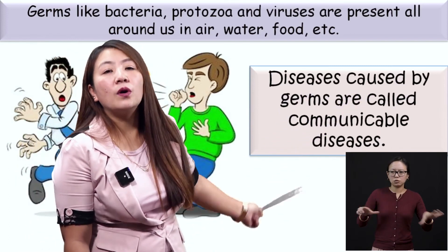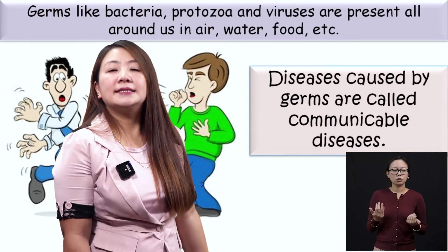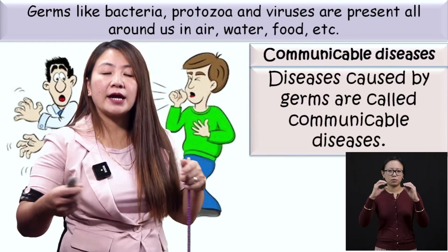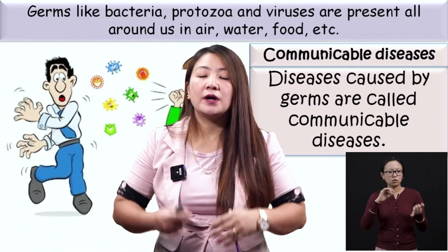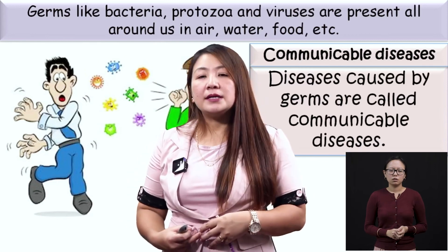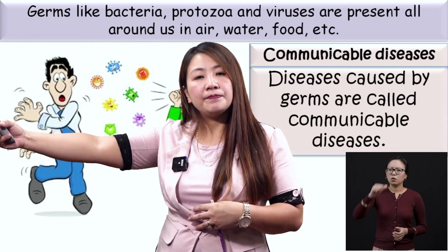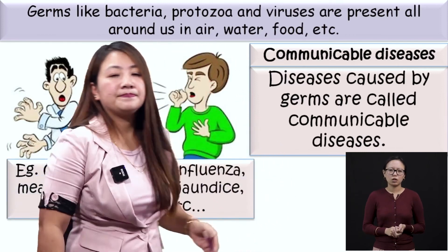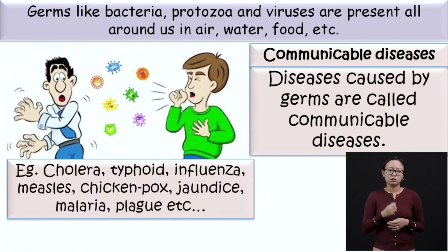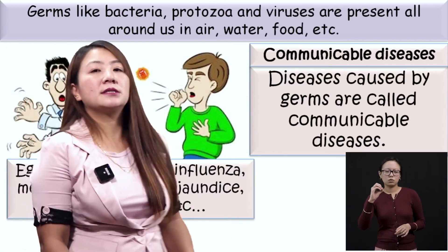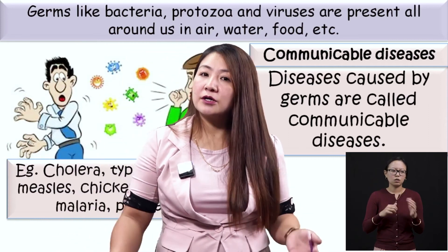Examples of communicable diseases include cholera, typhoid, influenza, measles, chickenpox, malaria, and jaundice — all caused by germs. These can be spread in the following ways: by direct contact, such as shaking hands, or by wearing clothes of someone infected with ringworm or scabies.